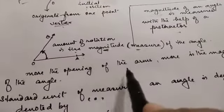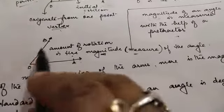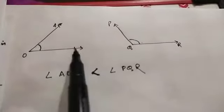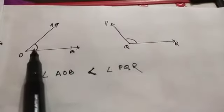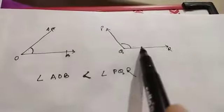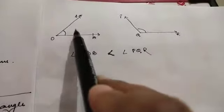The more the opening of the arms, the more will be the magnitude of the angle. Look at these two figures. In this figure you see OB and OA are two rays but the arms are close enough to each other. But here, angle PQR is formed by QR and QB and the arms are far apart. So when we have the opening of the arms less, the magnitude of the angle is also less. Therefore, angle AOB is less than angle PQR.